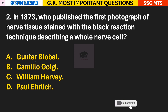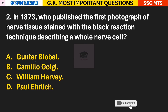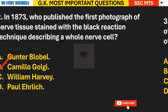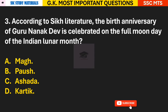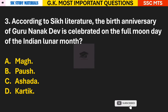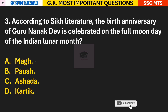Question 2: In 1873, who published the first photograph of nerve tissue stained with the black reaction technique describing a whole nerve cell? The answer is B — Camillo Golgi. Question 3: According to Sikh literature, the birth anniversary of Guru Nanak Dev is celebrated on the full moon day of which Indian lunar month?